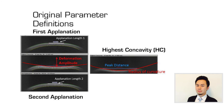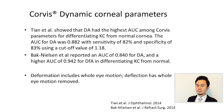The corneal dynamic response has different phases: the first applanation phase, the highest concavity phase, and the second applanation phase. There are many different parameters, and one of the most important is the deformation amplitude. Studies have shown that deformation amplitude had the highest AUC among Corvis parameters for differentiating keratoconus from normal cornea, with an AUC of 0.882, sensitivity of 82%, and specificity of 83%. Another study reported an AUC of 0.840 for deformation amplitude and a higher AUC of 0.942 for deflection amplitude. The difference is that deformation includes whole eye movement while deflection has whole eye movement removed from the waveform.